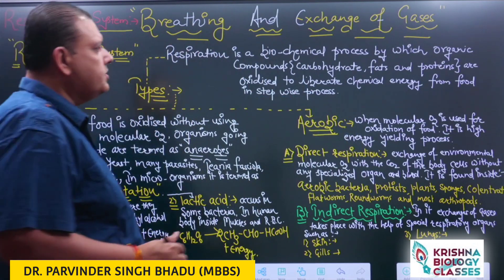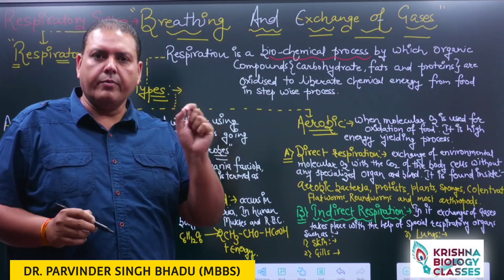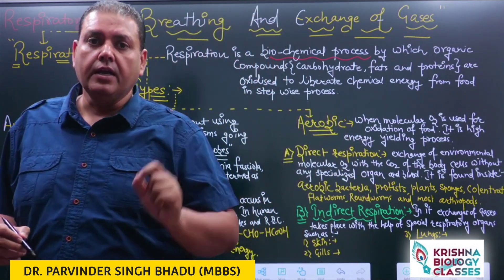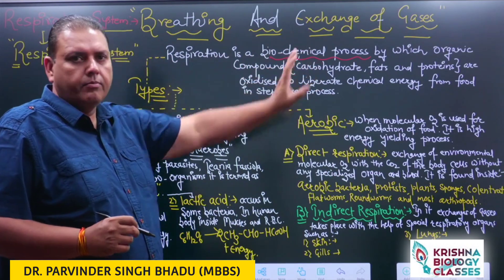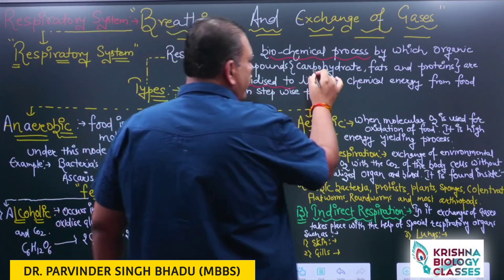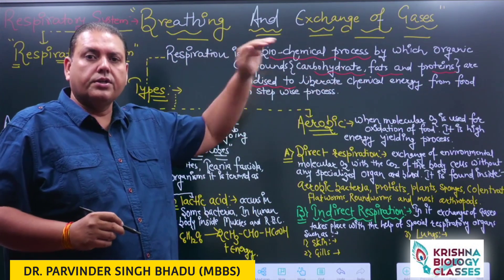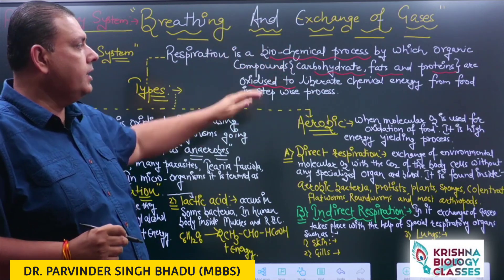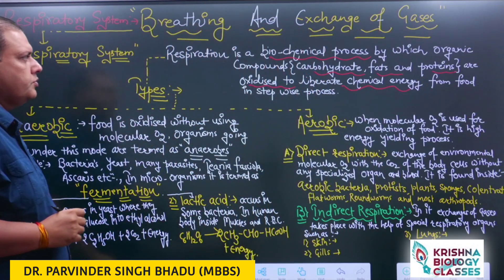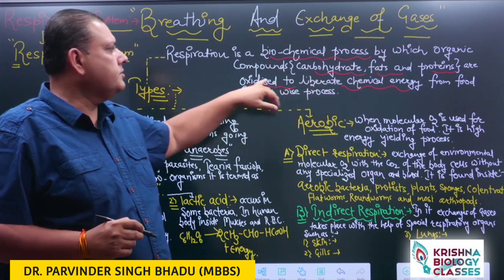When we start to discuss about the term respiration, we say it is a biochemical process. This means there is a chemical reaction in which oxidation of food is taking place, and it always takes place inside the cells of the living organism. Respiration is a biochemical process in which organic compounds like carbohydrates, fats, and proteins get oxidized to release energy in a stepwise process.